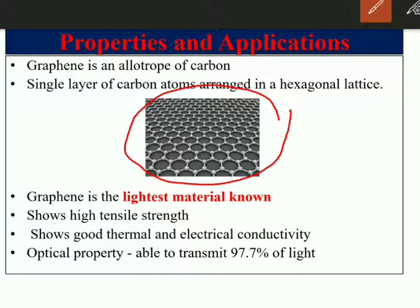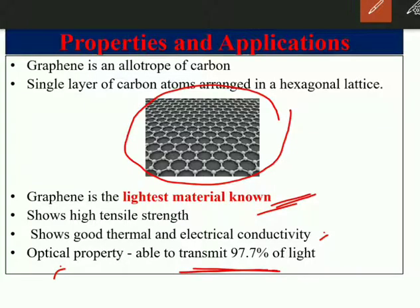Graphene is the lightest material known and possesses very high tensile strength — 100 to 300 times stronger than steel. It shows very good thermal and electrical conductivity. An important optical property to remember is that graphene is able to transmit 97.7 percent of light.